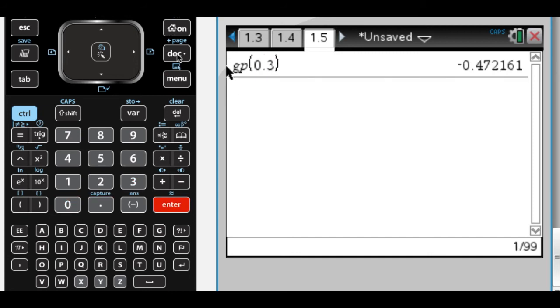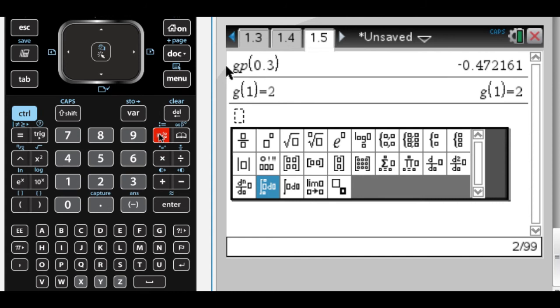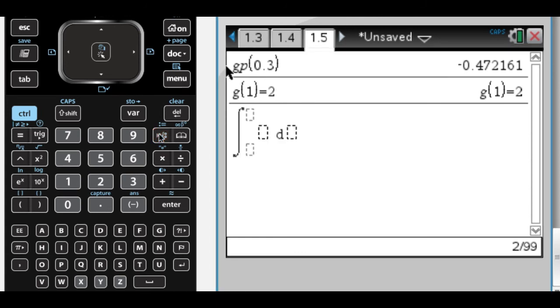And then I need the y value at 0.3. Well, I know that g of 1 is equal to 2. So I know g of 1 equals 2. And I also know that if I do the integral of g prime from 0.3 to 1 of g prime of x dx,